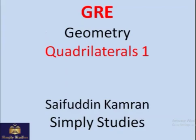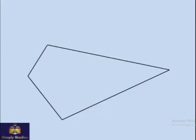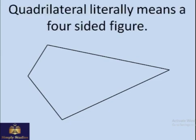GRE geometry — quadrilaterals. Let's explore what a quadrilateral is. A quadrilateral is any shape with four sides. It's a four-sided figure: one, two, three, four.